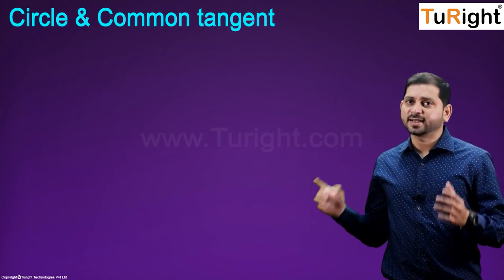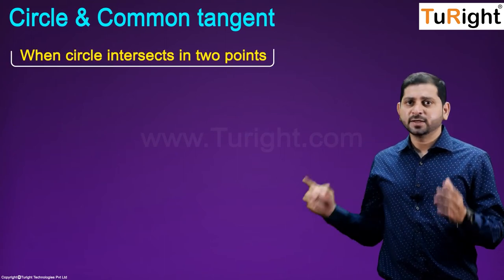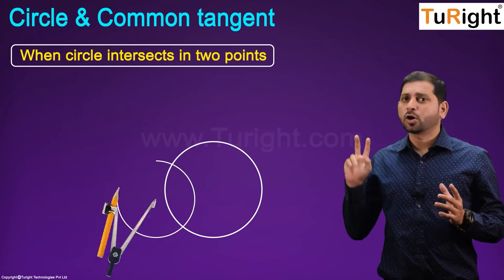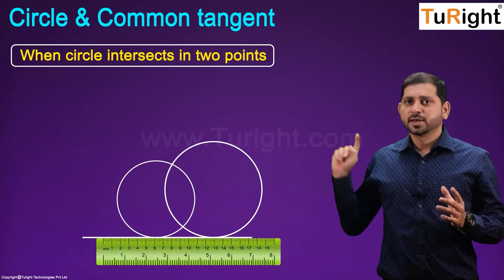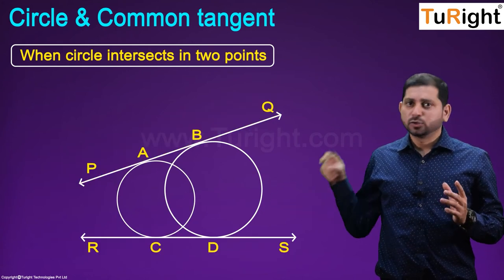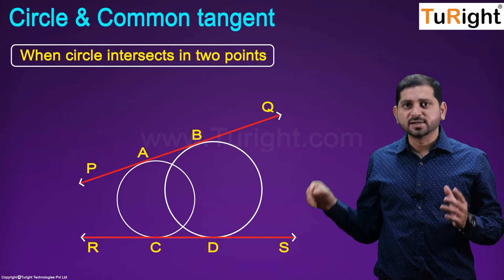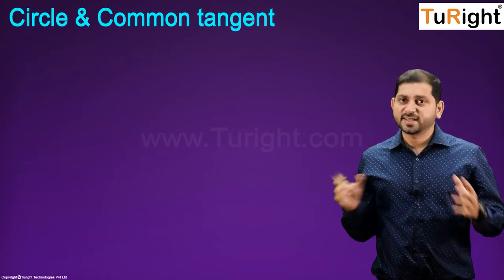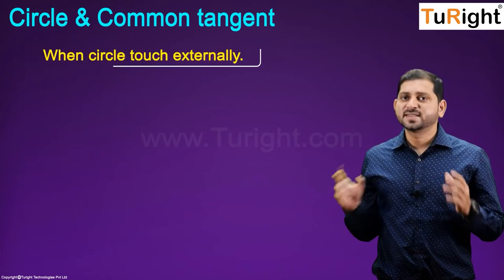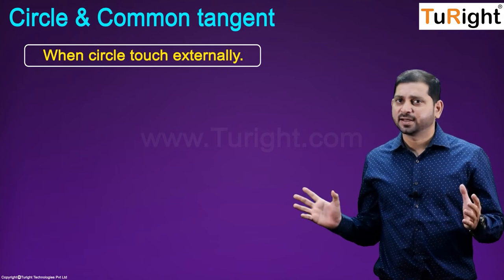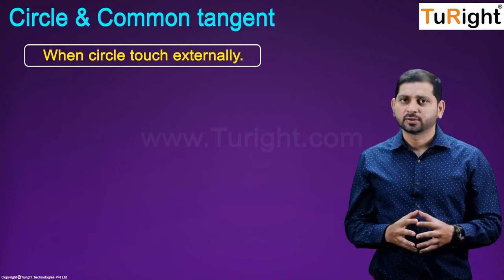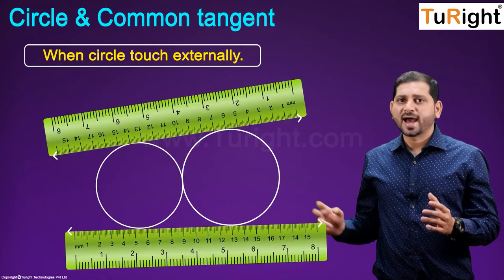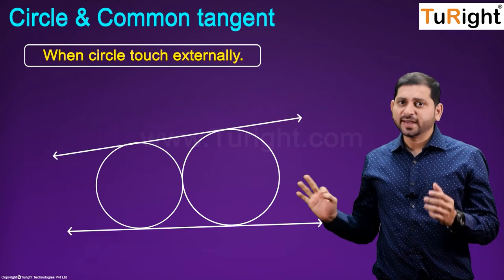Case 1: When two circles intersect at two points — in this case, there are two common tangents, PQ and RS, to the two circles, as shown. Case 2: When two circles touch externally — in this case, the two circles will have three common tangents: L, M, PQ, and RS, as shown.